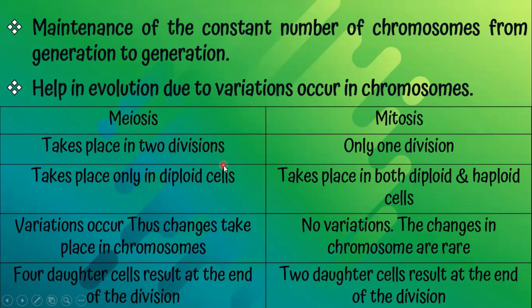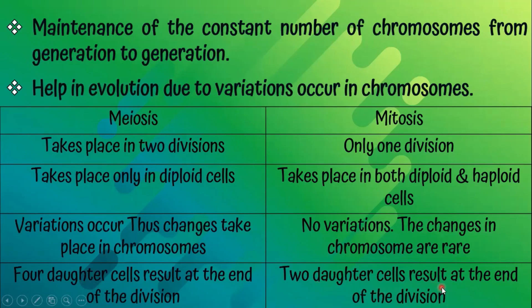Let's talk about the differences between meiosis and mitosis. Meiosis takes place in two divisions; mitosis takes place in only one division. Meiosis takes place only in diploid cells; mitosis takes place in both diploid and haploid cells. Variations occur in meiosis — changes take place in chromosomes; in mitosis, no variation or changes in chromosomes are rare. In meiosis, four daughter cells result at the end of division.